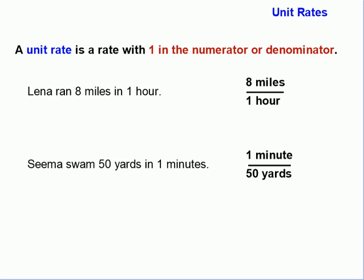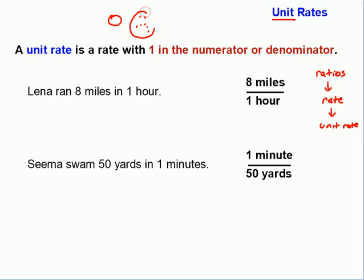For this lesson, we also need to understand what a unit rate is. We have ratios, and a kind of ratio called a rate, which measures two different quantities of two different measures. A unit rate is a kind of rate that measures two different units, but it involves the word 'unit.' Unit means one — think of unicycle, a bicycle with one wheel, or unify, which means to bring everything together into one. A unit rate is simply a rate with one in the numerator or the denominator.